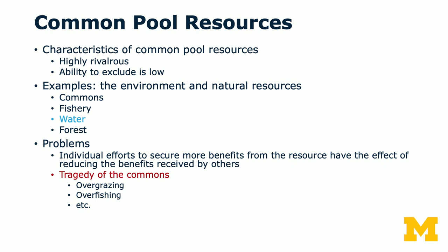The commons, fishery, water, or forests are all common pool resources. The problem with common pool resources is that individual efforts to secure more benefits from the resource have the effect of reducing the benefits received by others. There's a very well-known book called The Tragedy of the Commons. In the old days when farmers sent their cattle to the commons to graze, oftentimes they overgraze and deplete the commons. In fisheries, oftentimes fishermen overfish. And there are problems such as depleting the aquifer so that the community is depleted of water.